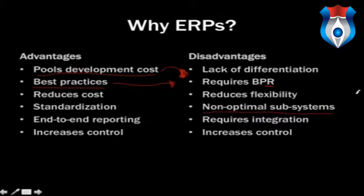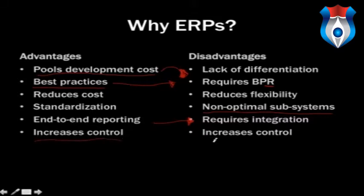Imagine if you're the accounting department and you love QuickBooks, but management says we're all going to standardize on this ERP system. It works for sales and manufacturing, but it's not nearly as easy to use for accounting. As an organization, you're going to assume some trade-offs. It increases standardization but may mean some subsystems are not quite optimal. You have end-to-end reporting, but it requires the organization to be a lot more disciplined — agreeing on data definitions, financial data needs, reporting requirements, and standardized labels. It increases control, which could be good or bad depending on management systems and how people feel about being closely managed.